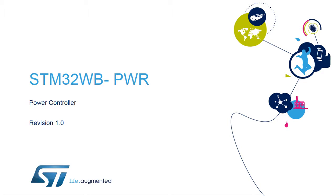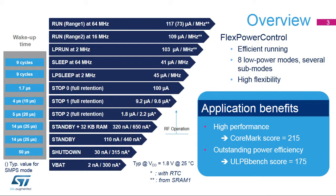Hello, and welcome to this presentation of the STM32WB Power Controller. Power management functions and all power modes will be covered in this presentation. STM32WB devices feature Flex Power Control, which increases flexibility in power mode management and further reduces the overall application consumption. Run mode can support a system clock running at up to 64 MHz with only 117 microamps per MHz.